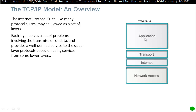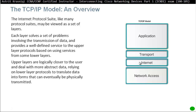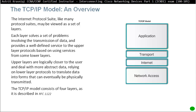The application layer is an upper-layer protocol, while the transport layer is a lower-layer protocol. Upper layers are logically closer to the user and deal with abstract data, relying on lower-layer protocols to translate that data into a form that can eventually be physically transmitted. The TCP/IP model consists of four layers as described in RFC 1122.